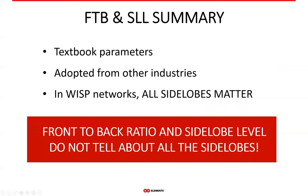To sum it up: not all antenna parameters are practically useful for WISP networks — it depends on the context the antenna is used in. The conclusion about front-to-back ratio and side lobe level is that these two parameters are really not important. They tell a very limited part of the story about side lobes. If you're wondering why WISP antenna manufacturers use them, my personal guess is they're simply remnants of the times when these parameters were the only ones easy to determine without heavy computational power.